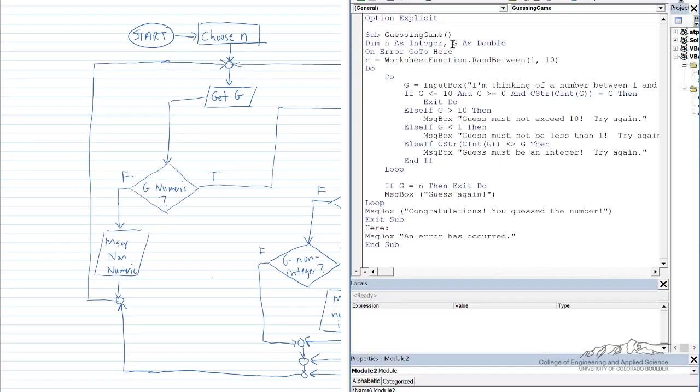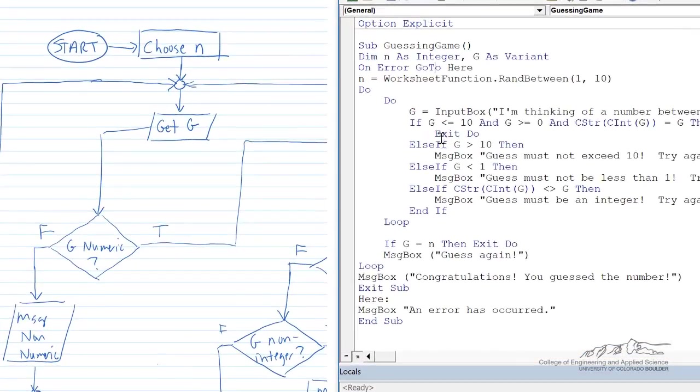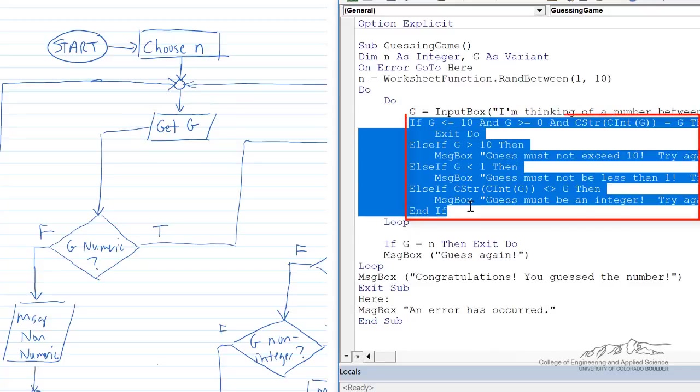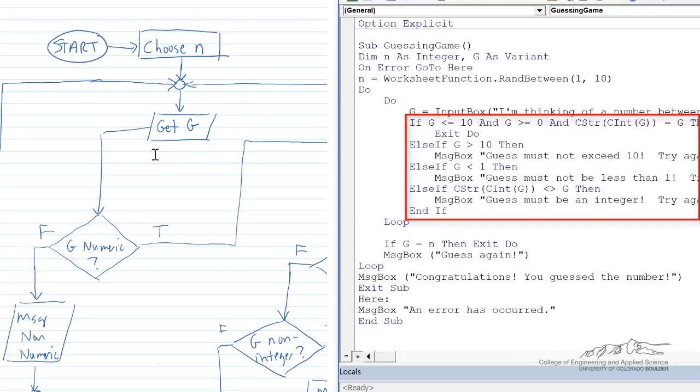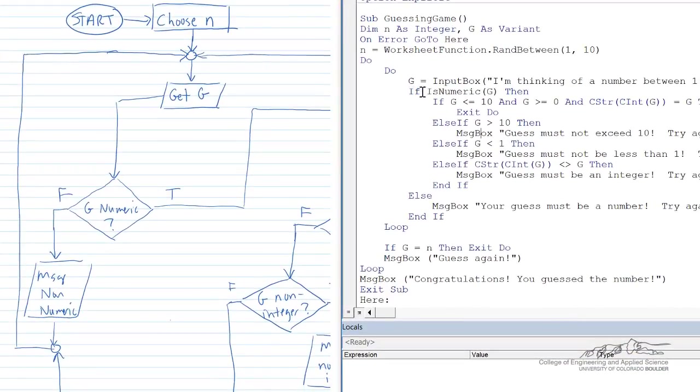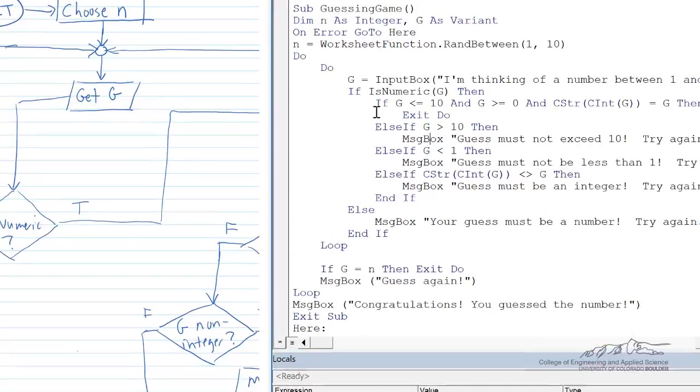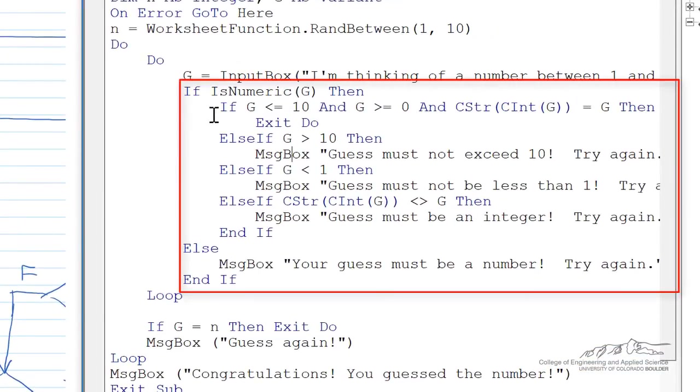In order for this to work, we have to redim g as a variant. We want it to accept strings so that we can identify that they have entered a string. Now what we're going to do is after we obtain g in the input box, we need to take all of this and put it inside an if statement, a two-way if statement, which is this g numeric on the flowchart. So we have if is numeric, that's how we can determine if g is numeric. If that's the case, then we move on with the rest of the input validation that we already set up.